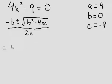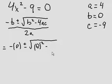Okay, so we start with negative 0 because that's b. 0 squared minus 4 times 4 times 9.